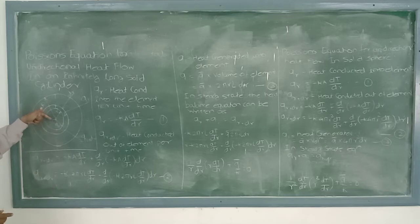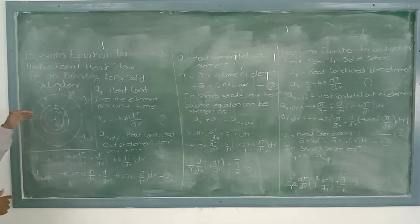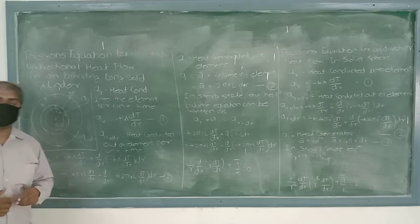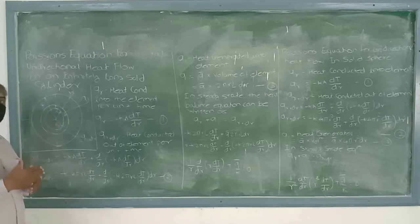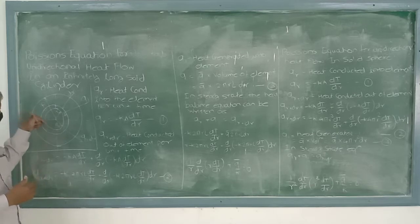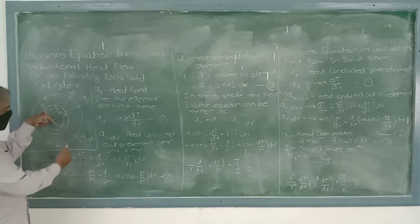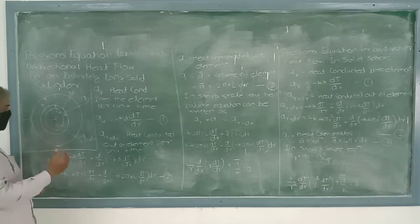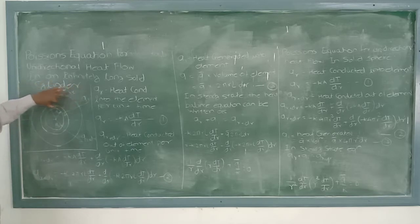qr is the amount of heat which is supplied from the centre of the cylindrical portion towards the outward in the radial direction. So qr is the heat conducted into the cylindrical portion in the radial outward direction — this is the heat supplied. And qr plus dr is the amount of heat which is coming out from the cylindrical portion.